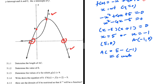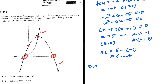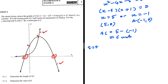What about 5.1.2? Determine the value of b. b is on g of x. We know that g of x equals b to the power x. We know that the two functions, g of x and f, they touch at d. So if we can determine the coordinates of d, then we can substitute those coordinates of d into g of x and find the value of b.